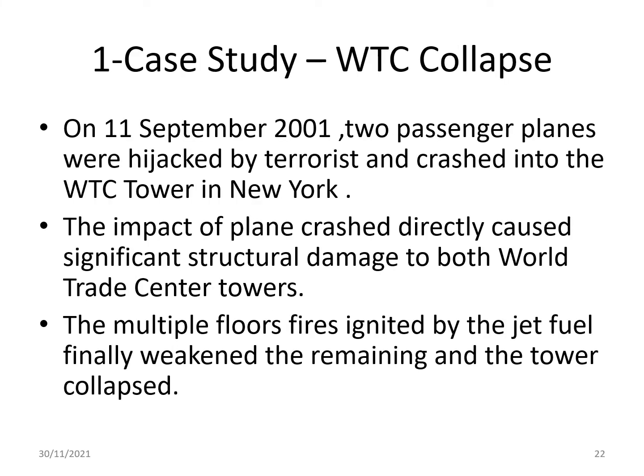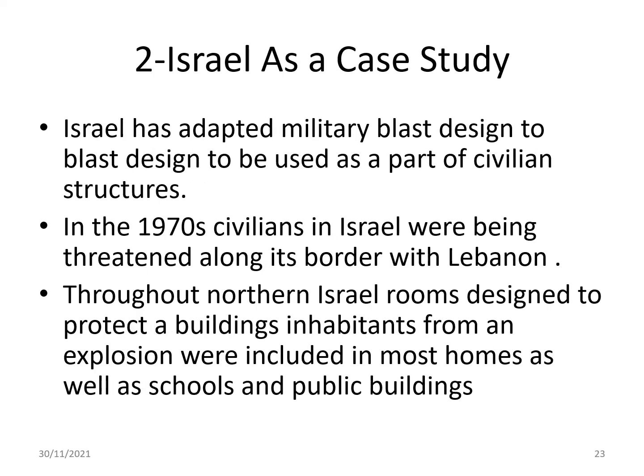Case study — WTC collapse on 11 September 2001: two passenger planes were hijacked by terrorists and crashed into the WTC towers in New York. The impact of the plane crash directly caused significant structural damage to both World Trade Center towers. Multiple floor fires ignited by jet fuel finally weakened the remaining structure and the towers collapsed.